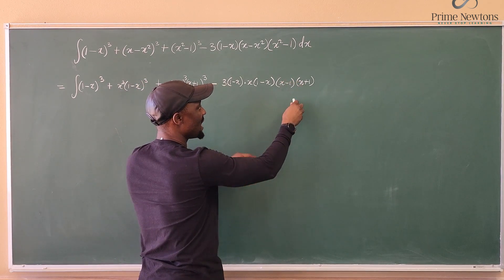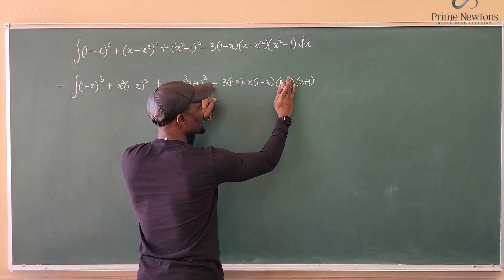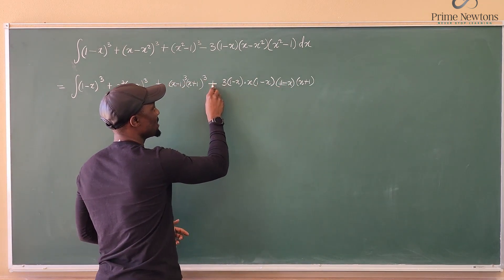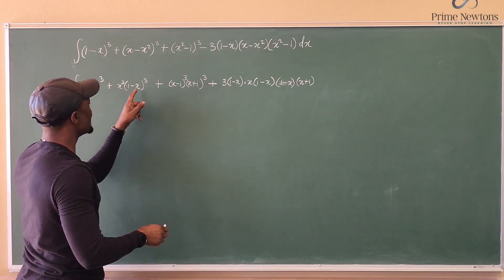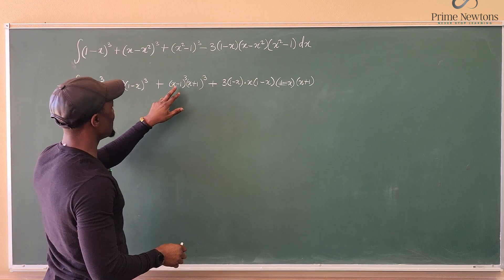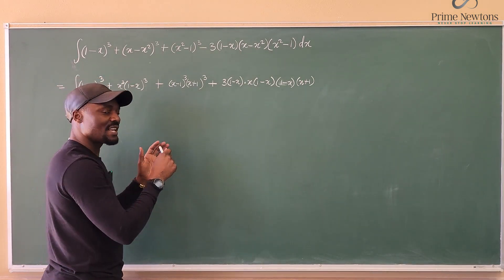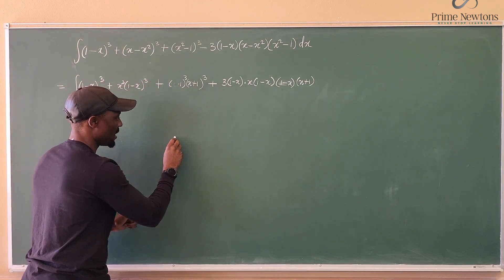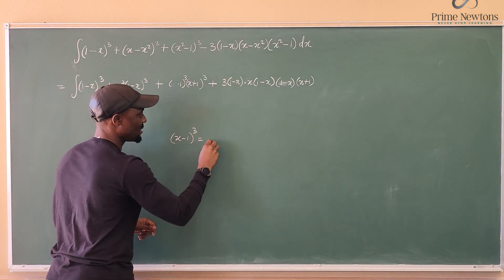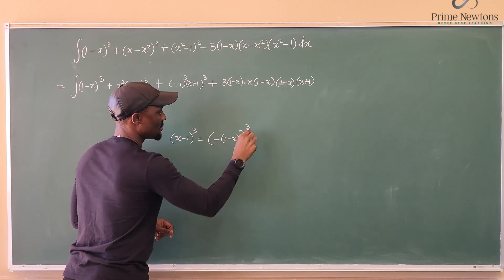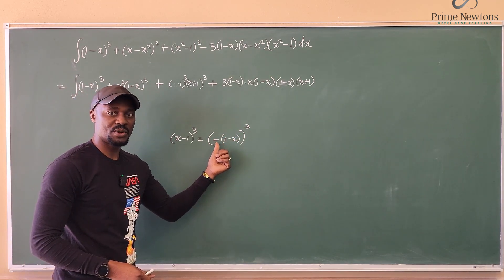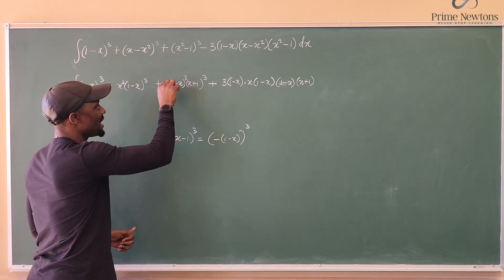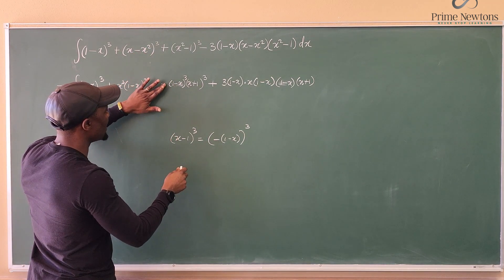Instead of writing (x-1), I can write -(1-x), and that negative travels up. Since (x-1)³ equals negative (1-x)³ — because when you cube a negative the negative stays — I can rewrite (x-1)³ as -(1-x)³, and that negative changes the sign to a negative.